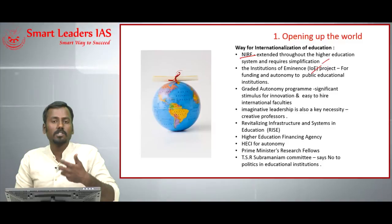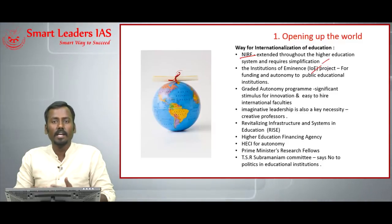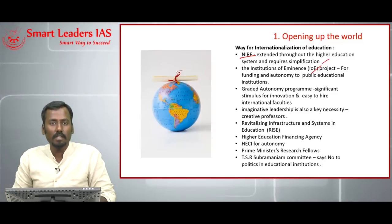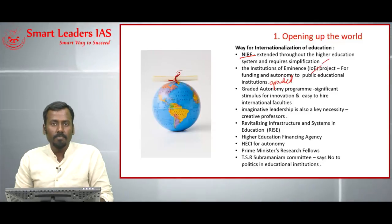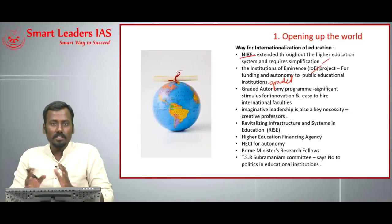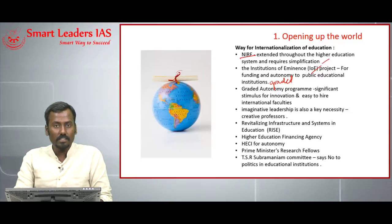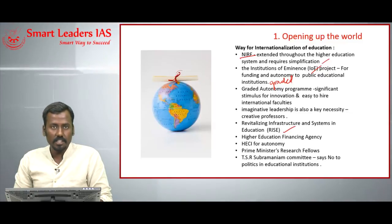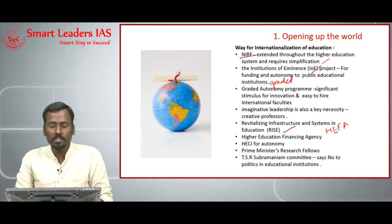The Institutions of Eminence scheme is trying to improve the quality of education in India by developing 20 universities into world-class universities. Greater autonomy has also been awarded to public institutions, which is bound to increase the quality of higher education. In Union Budget 2018-19, the government announced the RISE scheme — Revitalizing Infrastructure and Systems in Education — and we also have the Higher Education Financing Agency funding infrastructure development in higher education institutions.